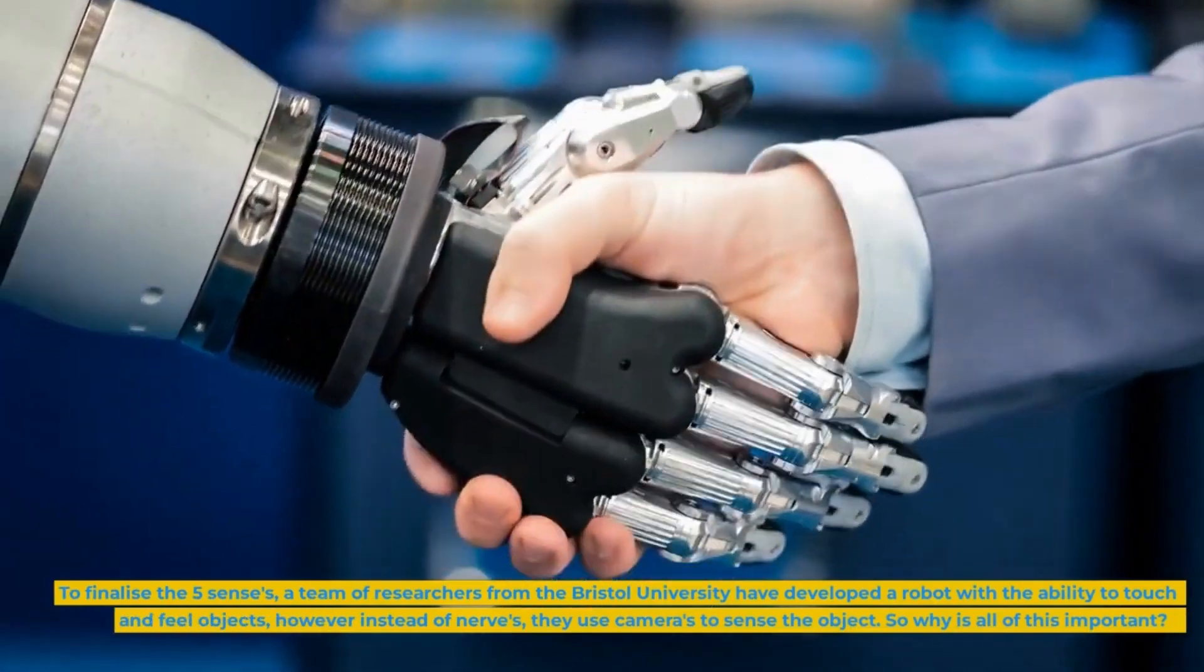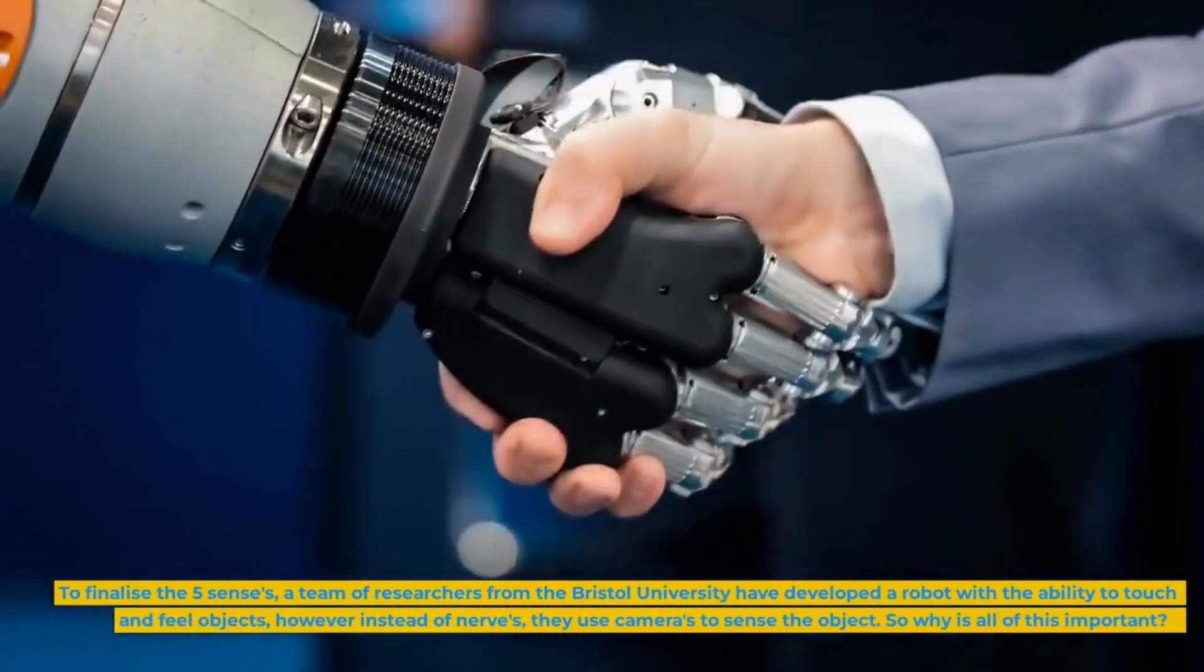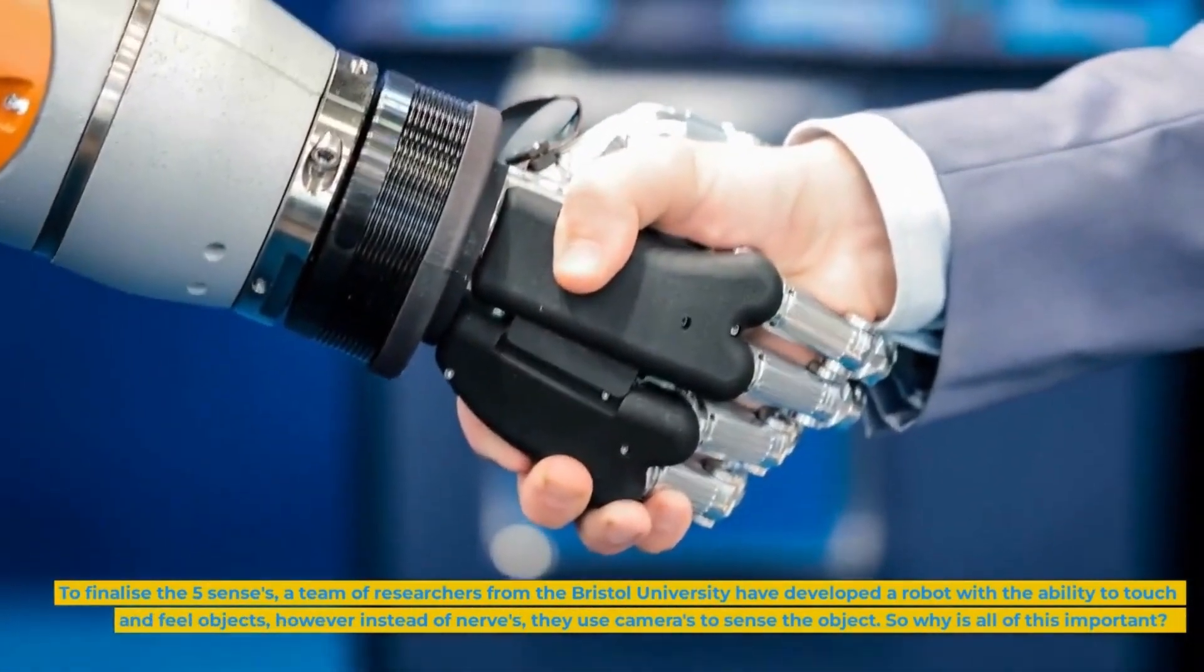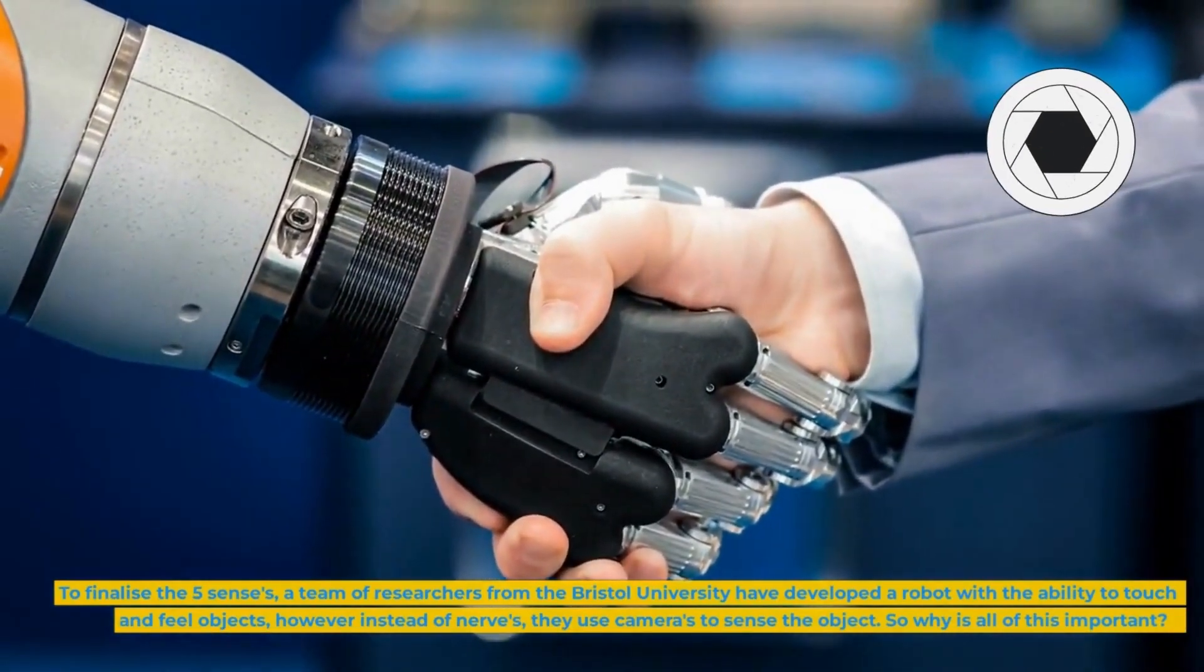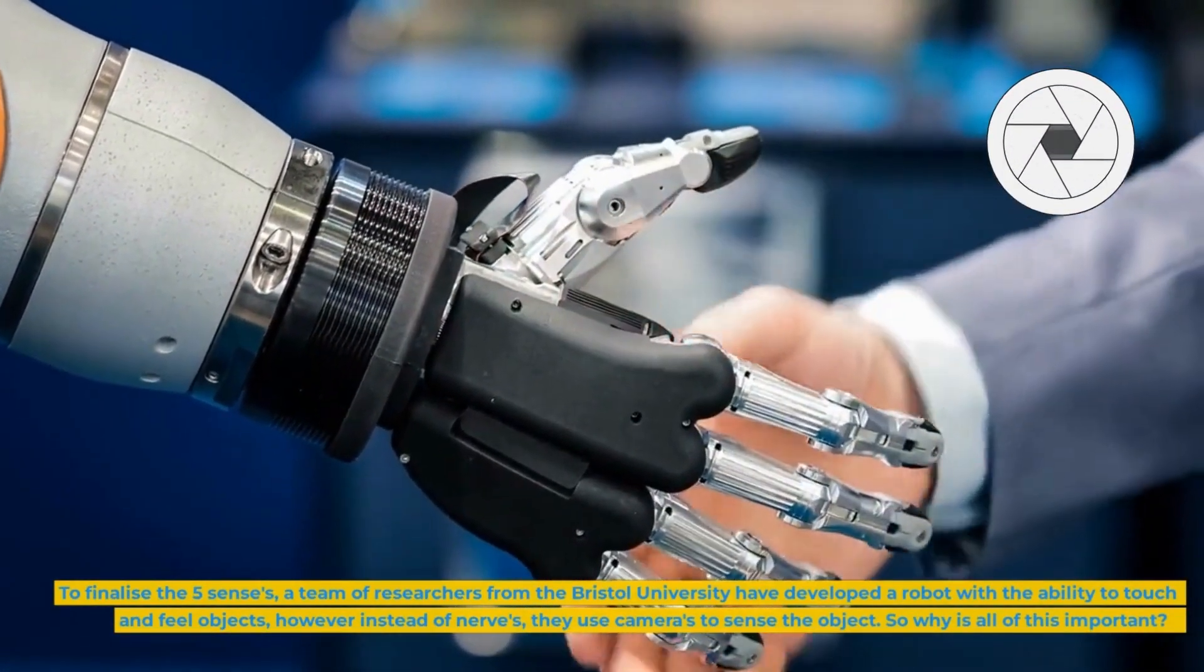To finalize the five senses, a team of researchers from the Bristol University have developed a robot with the ability to touch and feel objects, however instead of nerves, they use cameras to sense the object. So why is all of this important?